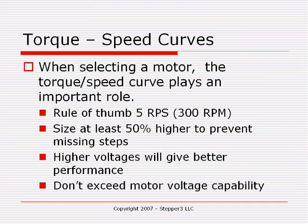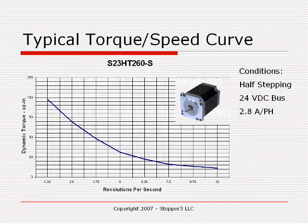Higher voltages on the stepper motor will give better performance. Running a stepper motor at 24 volts gives one torque speed curve, but if you increase the voltage to 40 volts, you get a significantly better torque speed curve. Again, higher voltages give better performance, but you can't exceed the motor voltage capability.